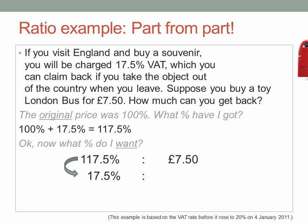So, how do I go from 117.5% to 17.5%? Multiply by the new number over the old. So do the same to the price on the other side.